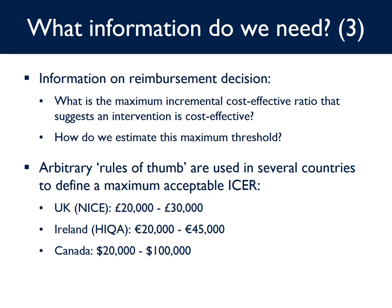What is the maximum acceptable ICER that suggests an intervention is cost effective? Arbitrary rules of thumb are used in several countries. NICE guidance states that interventions with an ICER of less than £20,000 per QALY gained are generally considered cost effective. Above an ICER of £30,000 per QALY gained, advisory bodies need to make an increasingly stronger case for supporting the intervention as an effective use of NHS resources. In Ireland, this range is €20,000 to €45,000, and in Canada it is wider still — C$20,000 to C$100,000 — though these ranges are not strictly adhered to and some argue even the lower estimates may be too high.